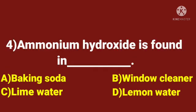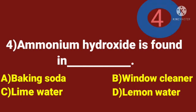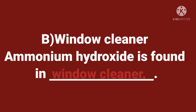Fourth question. Ammonium hydroxide is found in dash. A. Baking soda. B. Window cleaner. C. Lime water. D. Lemon water. Time starts now. And the answer is window cleaner. Ammonium hydroxide is found in window cleaner.